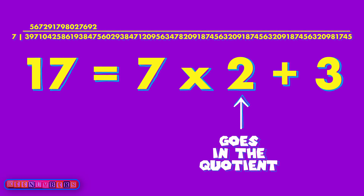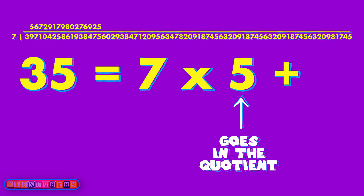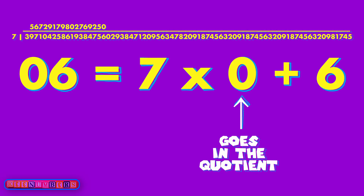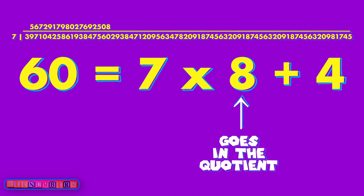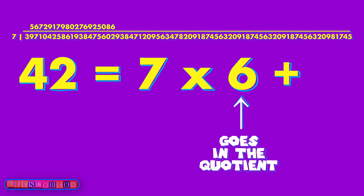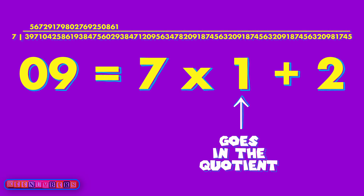Now we've got 35, which is 35 — nothing left over, that's great. Your five goes upstairs. When you pull down the six, seven doesn't go into six; you just have six left over. Pull down the zero and you get 60 — that's 56 and four, so put the eight upstairs. Now you've got 42 with nothing left over, so put that six upstairs. Pull down the nine to get nine — which is seven — and you have two left over. Put the one upstairs, pull down the three, and keep going.